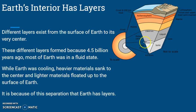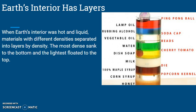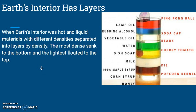Heavy materials sank to the center and lighter materials floated up to the top. Most of you are familiar with what happens when you mix liquids of different densities — like this picture here where different liquids were poured together and allowed to settle. Over time they separate: the denser, heavier ones are on the bottom and the less dense, lighter ones are on the top. So when earth's interior was hot and liquid, materials with different densities separated into layers by density — the most dense sank to the bottom and the lightest floated to the top.